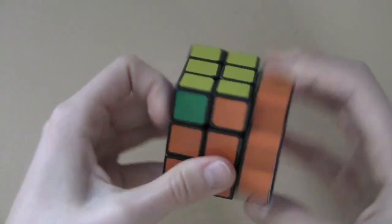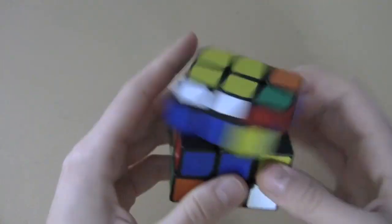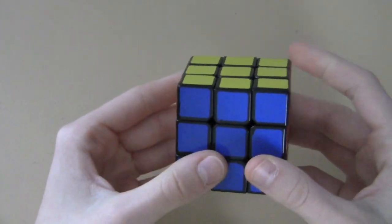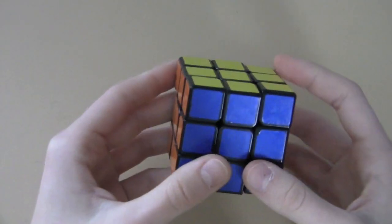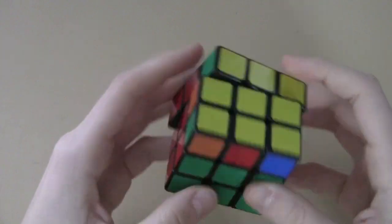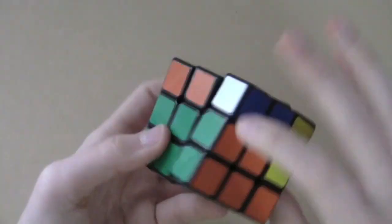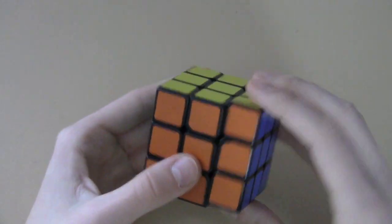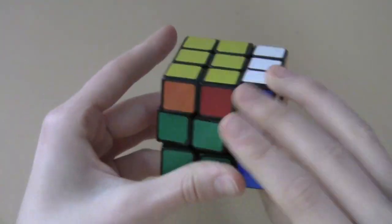So that is all for my video on how to execute and recognize the G-perm. If you have any questions, feel free to leave it in the comment section. And if you guys use any other algorithms that you think I might want to know, also leave that in the comment section. That is all for this video. I will see you guys next time. Bye.